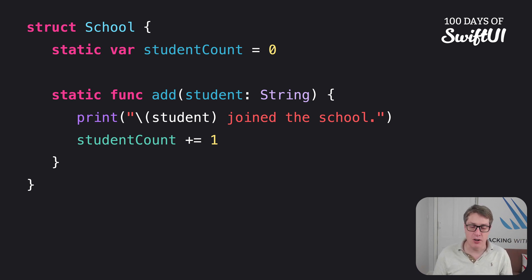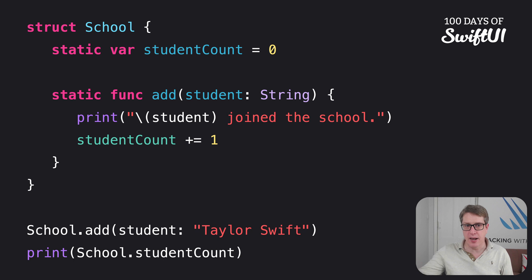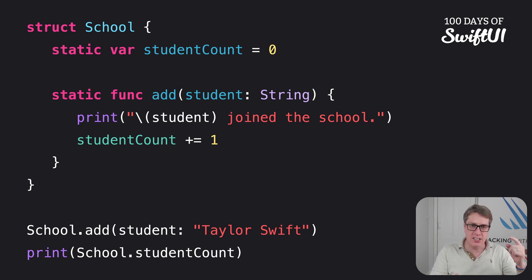To use it, we'd write School.add("Taylor Swift") or print(School.studentCount). I haven't had to make a new school instance — none of that. You access the property and method directly on the struct. This is because they're both static. They don't exist uniquely in every school instance, but exist only once across all school instances — they're all shared.